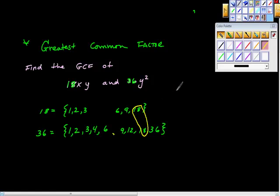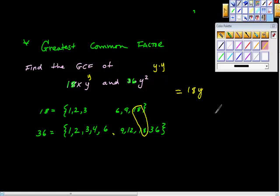The greatest common factor of 18 and 36 is 18. Now for the variables: 18xy has an x but 36y squared doesn't, so they don't share x at all. This one has y and this one has y times y — just a single factor of y each — so they share 18y. The greatest common factor is 18y.